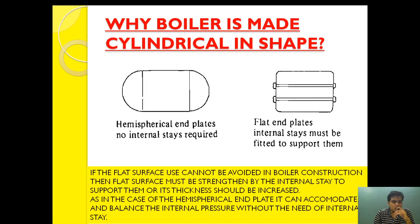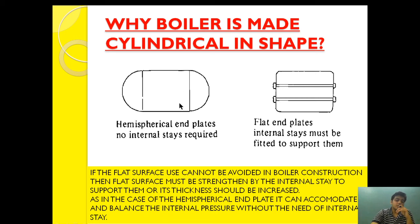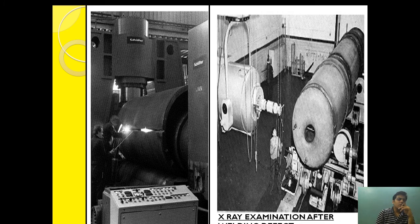Increasing the thickness too much leads to poor heat exchange, unwanted increase in weight, and increased material cost. So it is better to provide stays. The hemispherical end plate can accommodate and balance internal pressure without the need for internal stays. Hemispherical or cylindrical end surfaces don't require any stay because they can balance the force without internal stays.